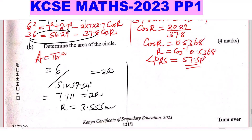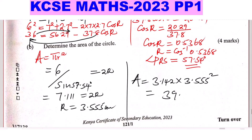Now we have the radius. Area equals pi times r squared, using pi as 3.142 times 3.555 squared, which gives 39.71 centimeters squared. That is how we solve this question. Thank you.